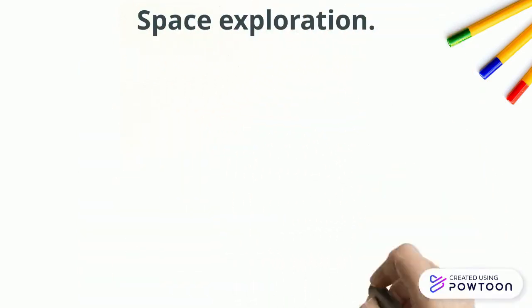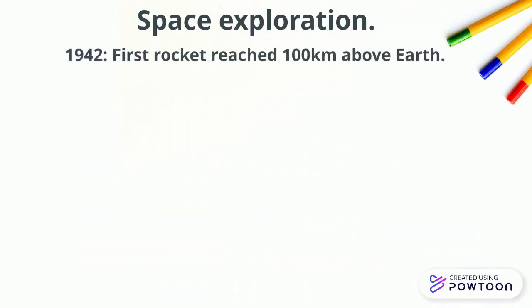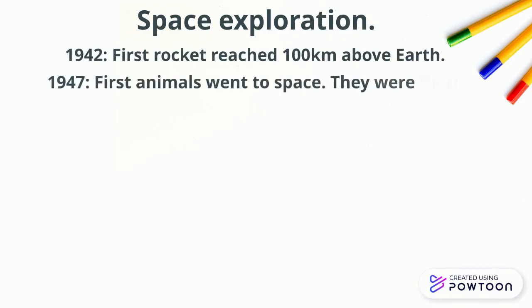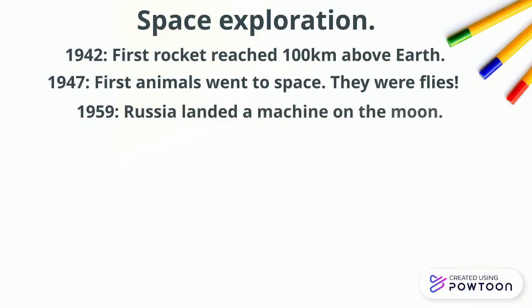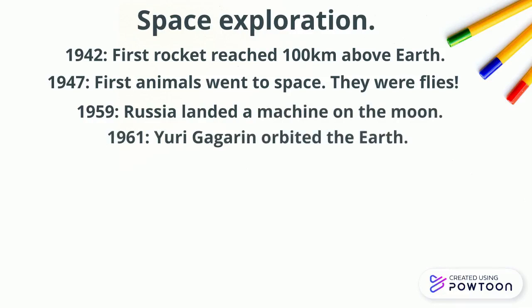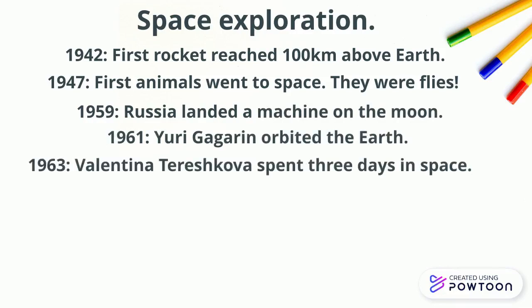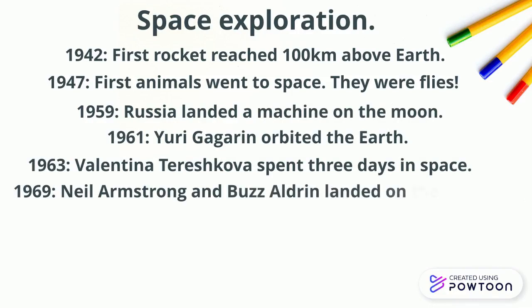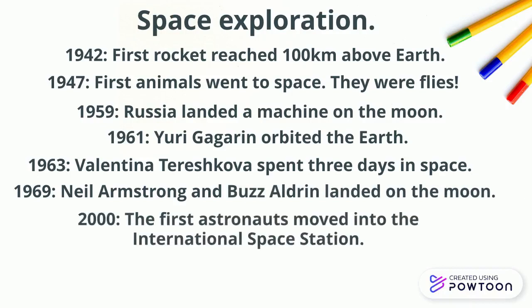Space exploration. In 1942, the first rocket reached 100 kilometers above Earth. In 1947, the first animals went to space — they were flies. In 1959, Russia landed a machine on the Moon. In 1961, Yuri Gagarin orbited the Earth. In 1963, Valentina Tereshkova spent three days in space. In 1969, Neil Armstrong and Buzz Aldrin landed on the Moon. And in 2000, the first astronaut moved into the International Space Station.